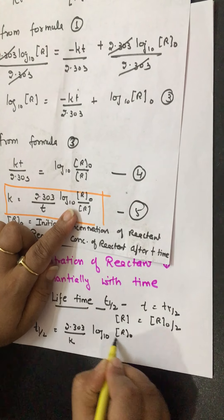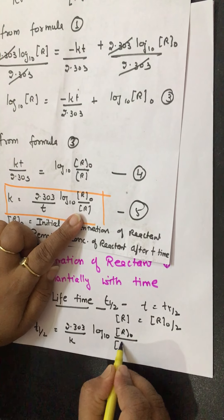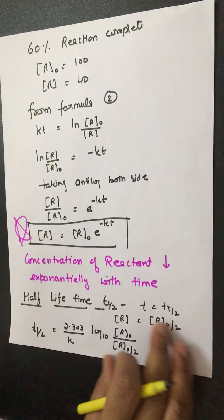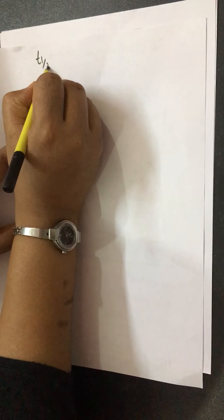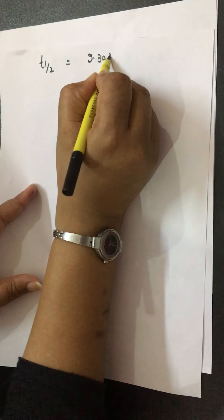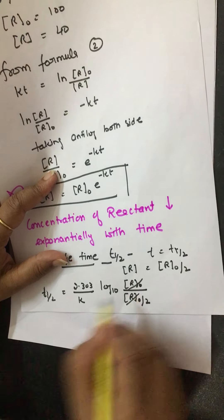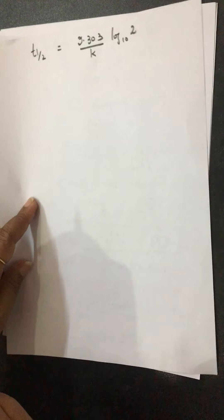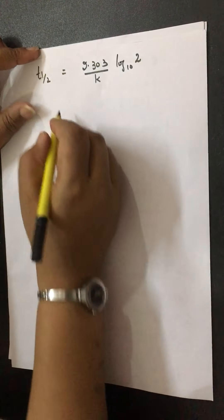For first order kinetics, T½ equals 0.693/k is very important. Sometimes T½ is given and you have to find the rate constant or order of reaction. Next topic is lifetime or T₁₀₀%. Lifetime means the whole reactant is converted into product. At that time, T becomes T₁₀₀% and concentration of reactant R becomes zero.